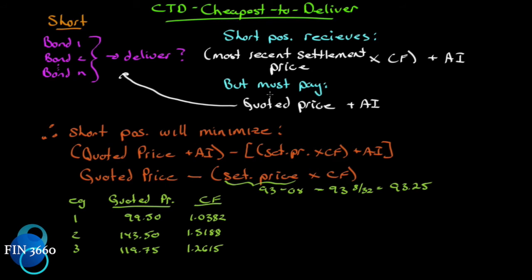Let's say the contract is over and now we must deliver — we're the short position. We have all of these bonds: bond 1, bond 2, all the way down to bond N. We can choose any one of these to deliver; they all qualify. We need a mechanism for selecting which one we're going to choose, and we're looking to find basically CTD — our cheapest to deliver — of all these bonds.